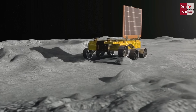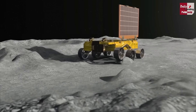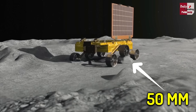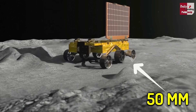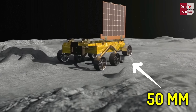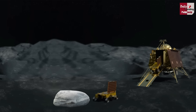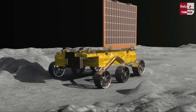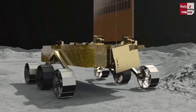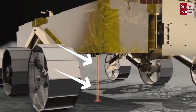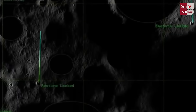Jaise ki hum bata chuke hain: chand ki satah par rover ke chalte samay saamne koi 50 mm tak uncha object aane par yeh aasaani se nikal jayega. 50 mm se adhik uncha object aane par yeh apna raasta badal dega. ISRO vaigyanikon ki command par rover ek jagah ruk kar laser kirnon ko chand ki satah tak bhejega.